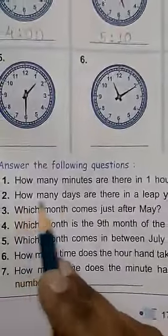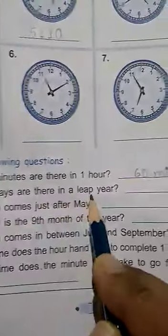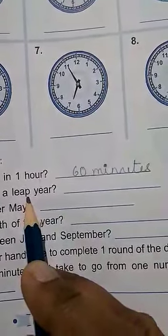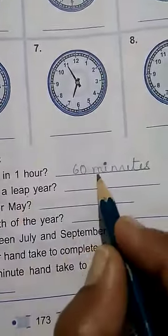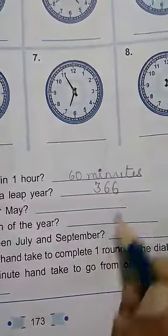Then, second question, how many days are there in a leap year? In a leap year, the month February has 29 days. So the total number of days is 366. You will write here 366.